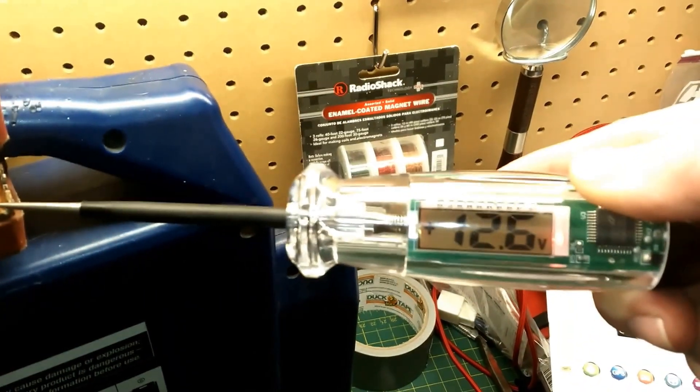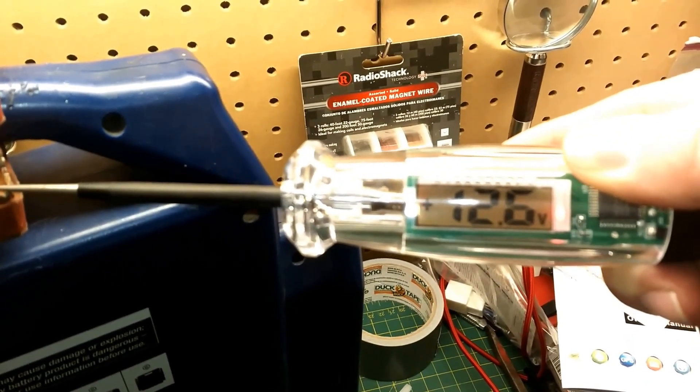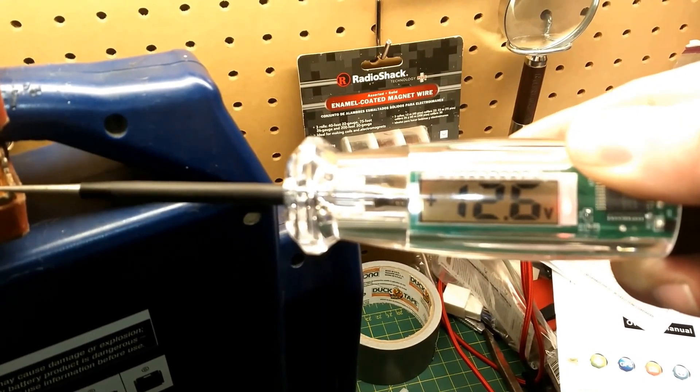going to not only give you a red indicator light letting you know there's power there, but it also tells you it's a positive signal and we're getting 12.6 volts out of this particular junction, which is pretty